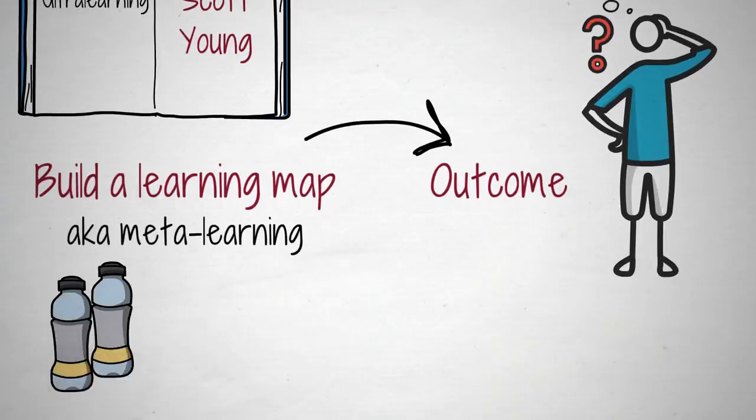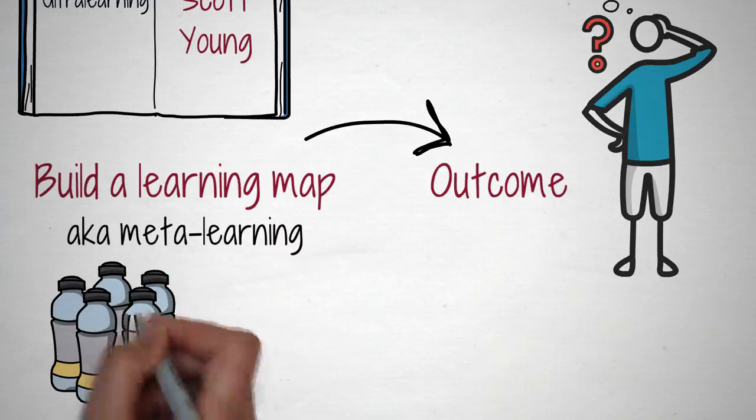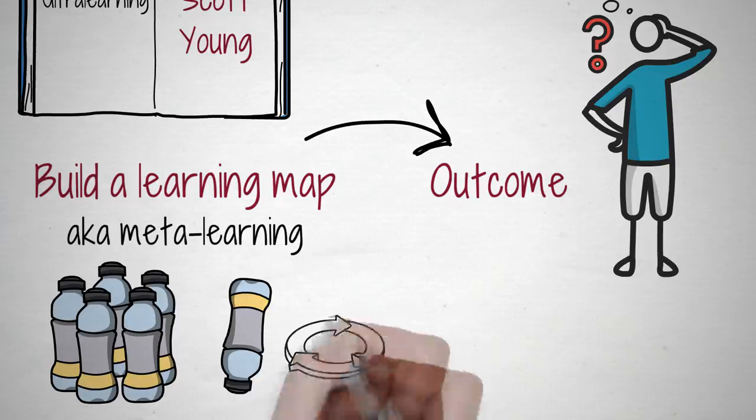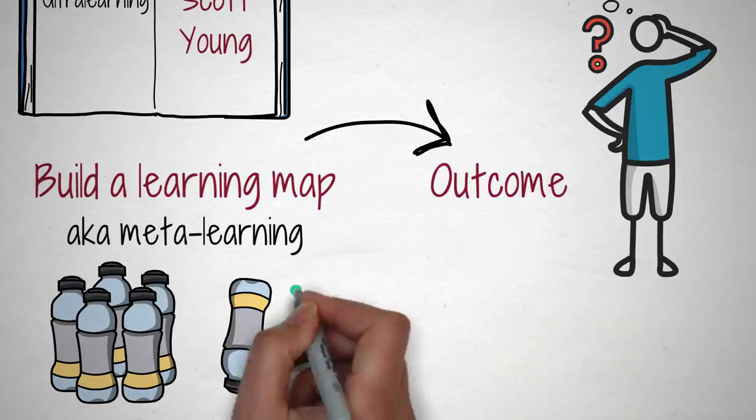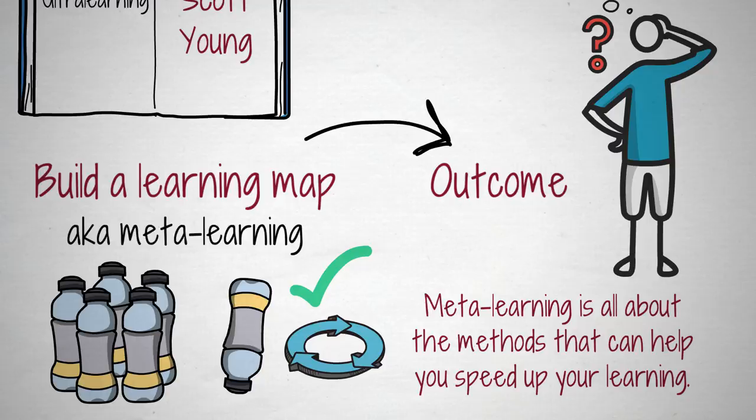To give you an example, imagine you must empty a hundred water bottles as fast as you can. If you don't know the trick of fast discharge by swirling the bottle, you'll do what most people do — flip the bottle into the sink and squeeze it. A massive waste of time. Meta-learning is like the trick to empty a water bottle faster. It's all about the methods that can help you speed up your learning.